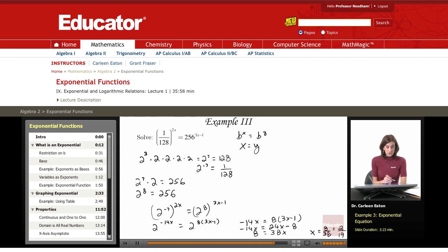So the hardest part for solving this was simply getting them into the same base. I was able to do that because 2 to the negative 7th is 1 over 128, and 2 to the 8th is 256. Once I did that, it was simply a matter of setting the exponents equal and solving a linear equation.